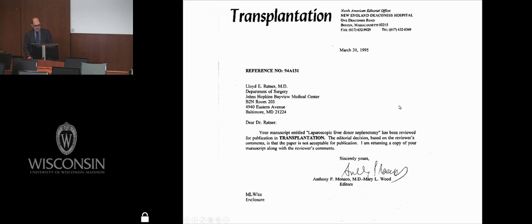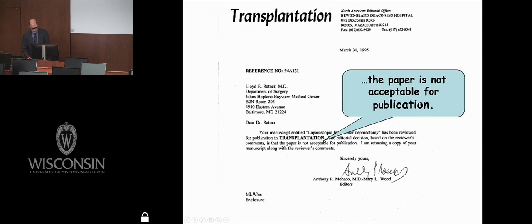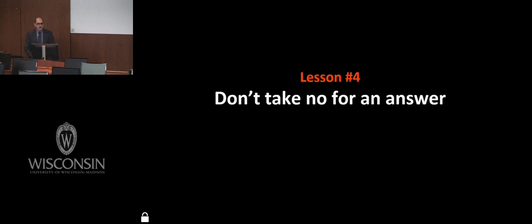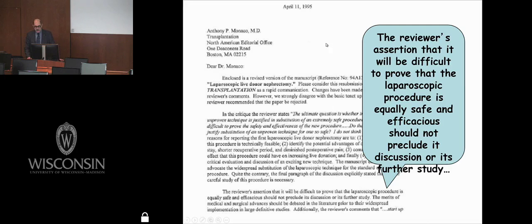Here's the letter I received from Transplantation rejecting my paper. The reviewer wrote: 'The real question is that standard living donor nephrectomy is so safe that its safety record should not be put in jeopardy. How many laparoscopic donor nephrectomies would have to be done to show that it's equivalently safe and you'll never be able to get that many cases, therefore you shouldn't do it.' I thought that was ridiculous. So lesson number four: don't take no for an answer. I wrote back a rather terse letter to the editor saying the reviewer's assertion that it will be difficult to prove the procedure is equally safe should not preclude its discussion or further study. I said, if you don't want to make it look like you're endorsing this procedure, write an editorial and say this is crazy, but don't prevent it from being published. Eventually, when we appealed to the European editor, he was able to get it approved.